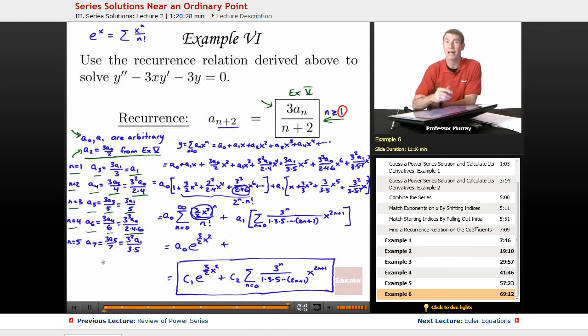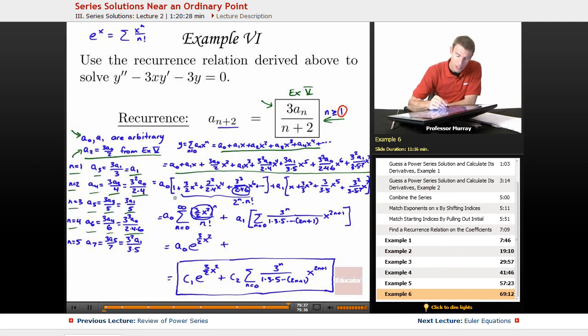So we got all these higher coefficients in terms of A0 and A1. So when we go back and look at our original series, our original guess, we can convert everything into A0s and A1s. And so we can factor out A0 times a bunch of terms, A1 times a bunch of terms, and with a little clever accounting on these terms with A0.